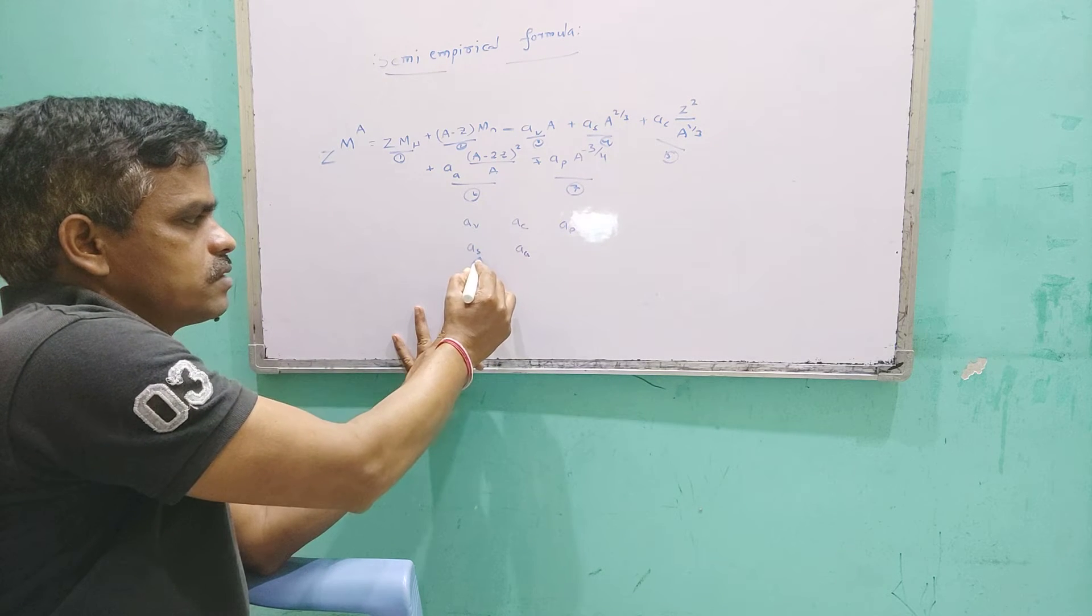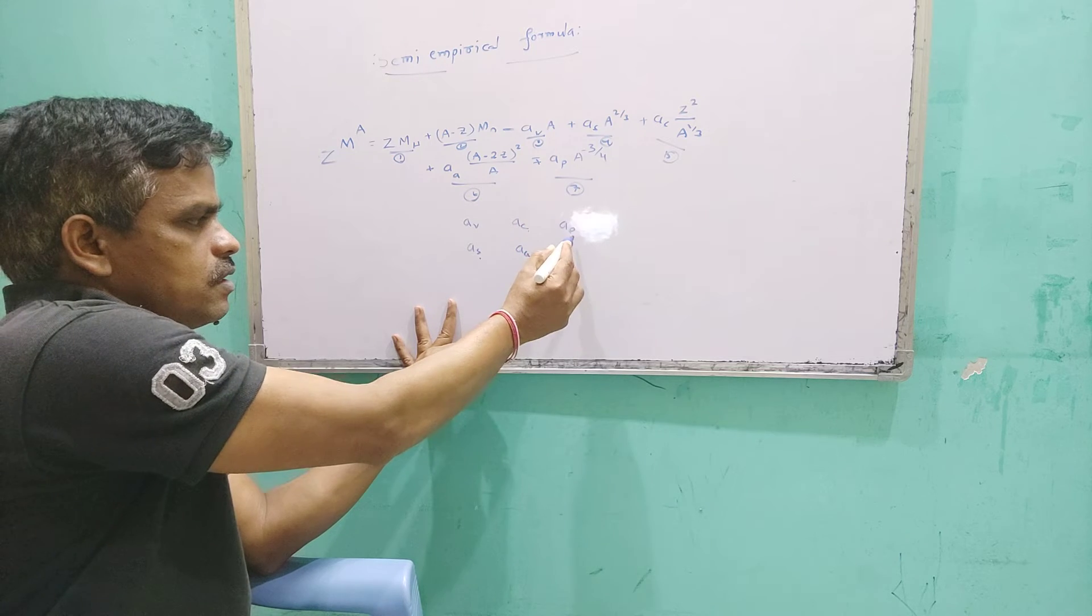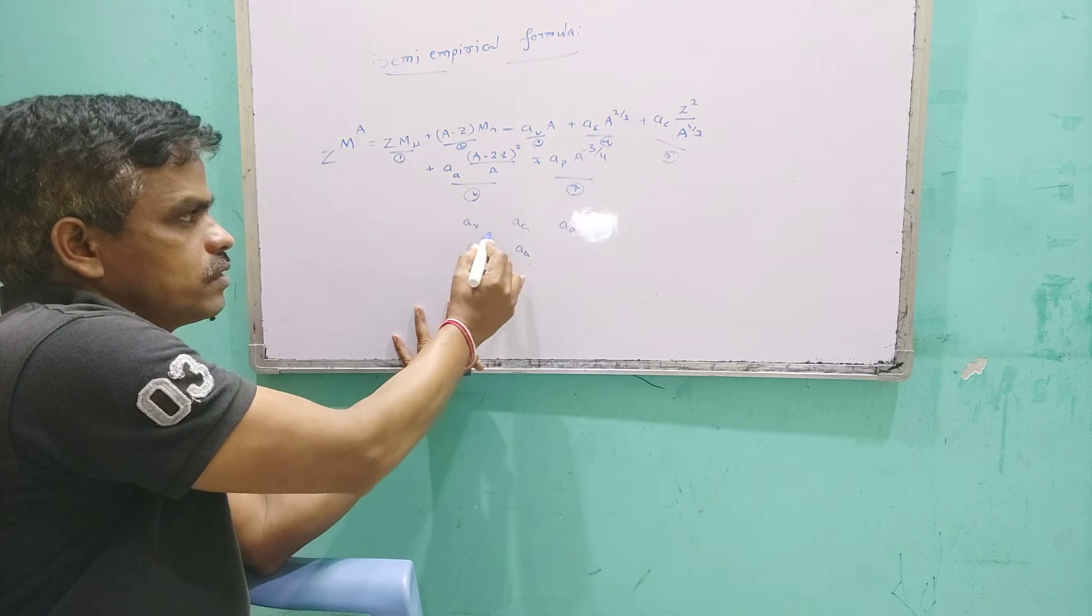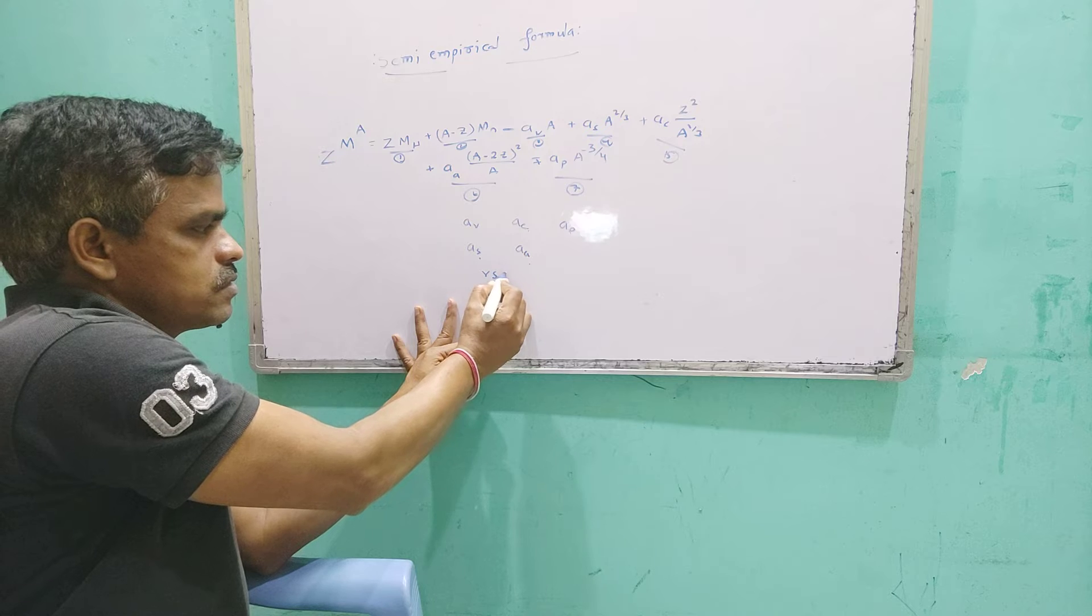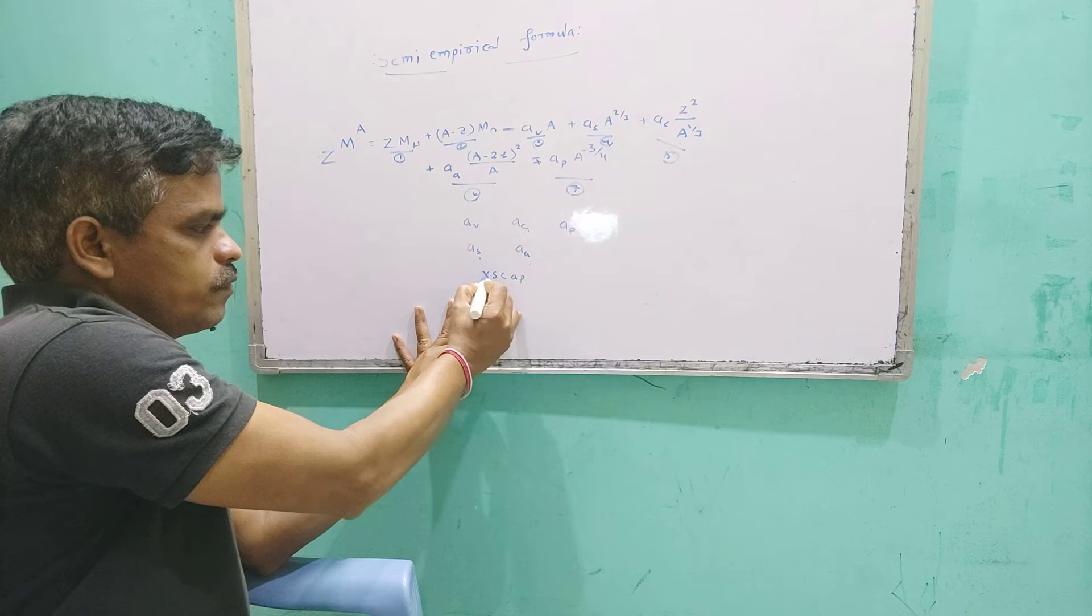These are the abbreviations: AV, AS, AC, AA, AP. If we give the order like this - V, S, C, A, P - volume, symmetry, coulomb, asymmetry, parity - we can remember them easily as V-S-C-A-P.